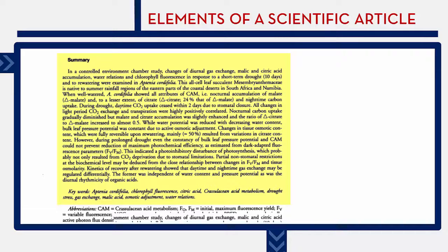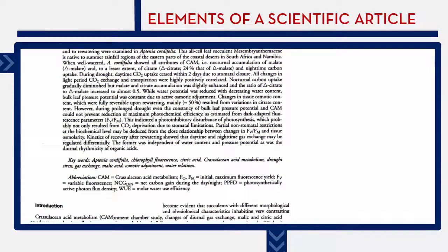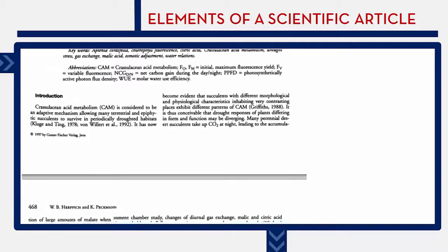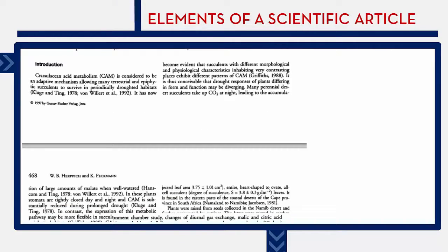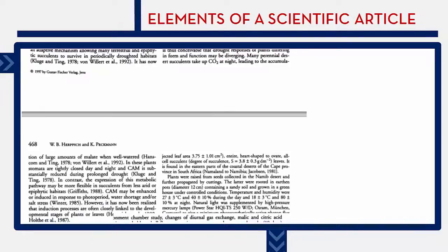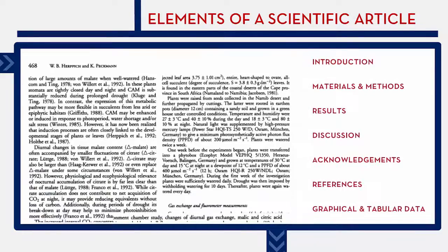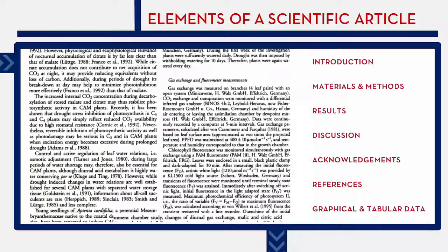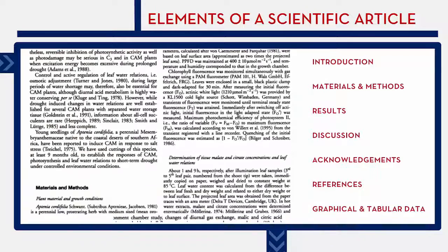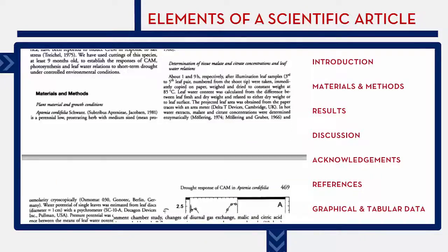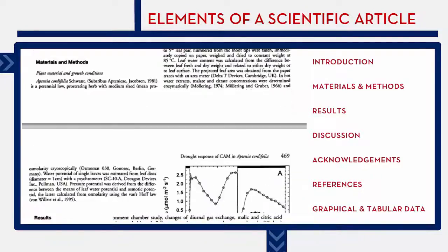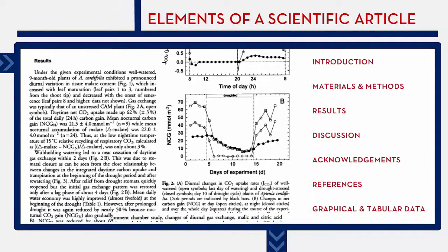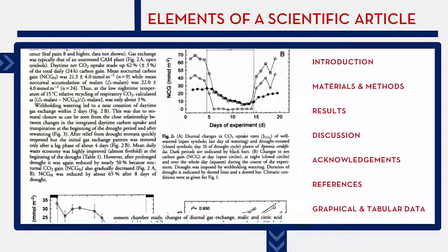If the article seems appropriate for your research topic, quickly scan through the paper to see if it has the common elements of an original scientific article. Start by looking at the section headers. In the vast majority of scientific articles, you should expect to see an introduction and sections explaining the experiment's materials and methods, results, a discussion of the findings, acknowledgements, and a list of references.